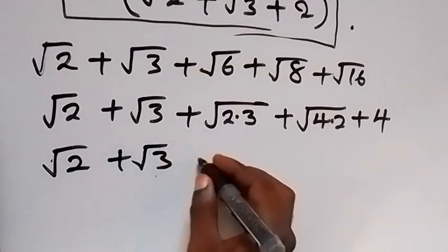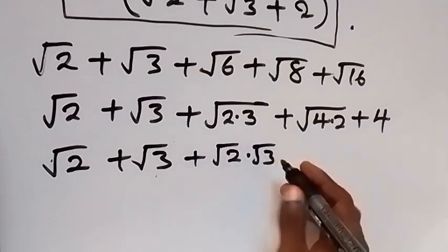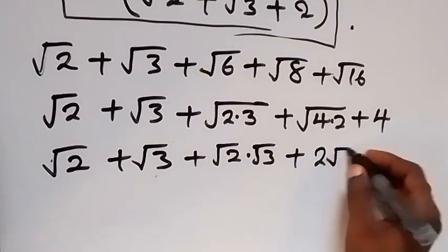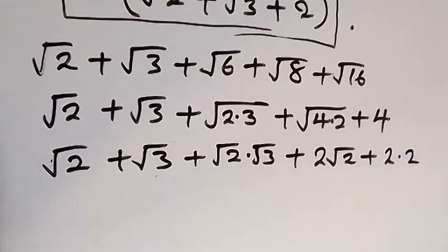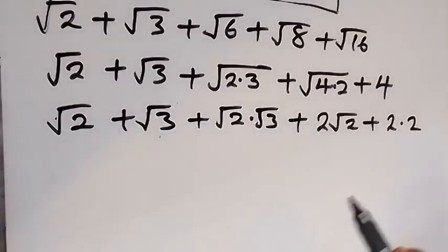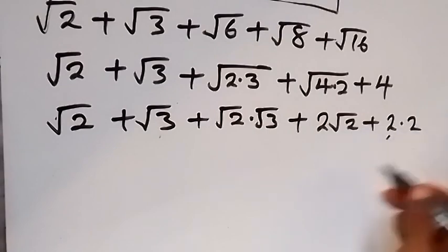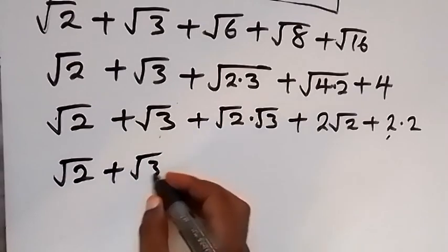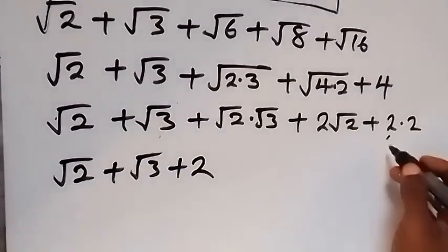Root 4 is 2, so root 4 times 2 gives 2 root 2. We also write 4 as 2 times 2. From here we group: taking root 2 plus root 3 plus one of the 2s, we now have root 2 plus root 3 plus 2.